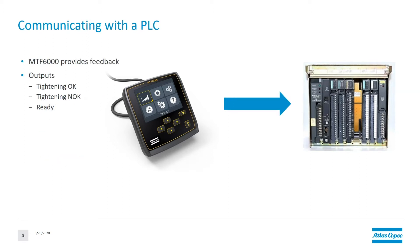On the flip side, the MTF-6000 can provide feedback to the PLC. These are through the outputs, and these could be things such as the tightening was okay, the tightening was not okay, or the controller is ready. There are also many other inputs and outputs that can be provided, and this can be found in the ToolsTalk MT manual.